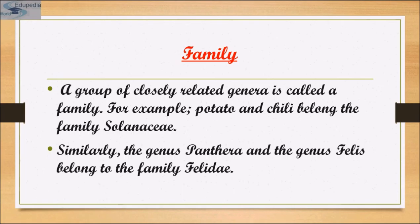Among plants, three different genera — Solanum, Petunia and Datura — are placed in the family Solanaceae. Among animals, genus Panthera comprising lion, tiger and leopard is placed along with genus Felis (cats) in the family Felidae. Similarly, if you observe a cat and a dog, you will find some similarities and some differences — they are separated into two different families, Felidae and Canidae respectively.